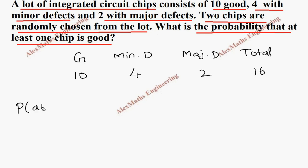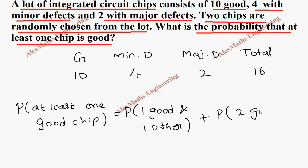of at least one good chip is out of two, there can be one good or both good. So P of one good and one other, and it can be P of two good, it means both are good.